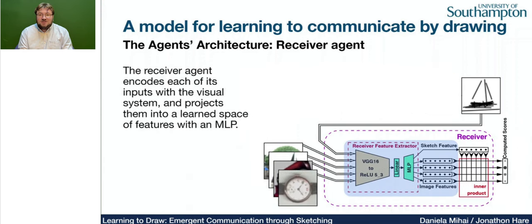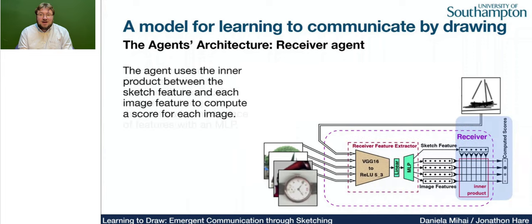Inside the receiver agent, there are two parts. The visual part has the VGG16 linear projection followed by a multi-layer perceptron that transforms the features into a different space. That is then coupled to a module which computes scores using the inner product — the dot product between the sketch feature and each of the image features — giving a score for each image.